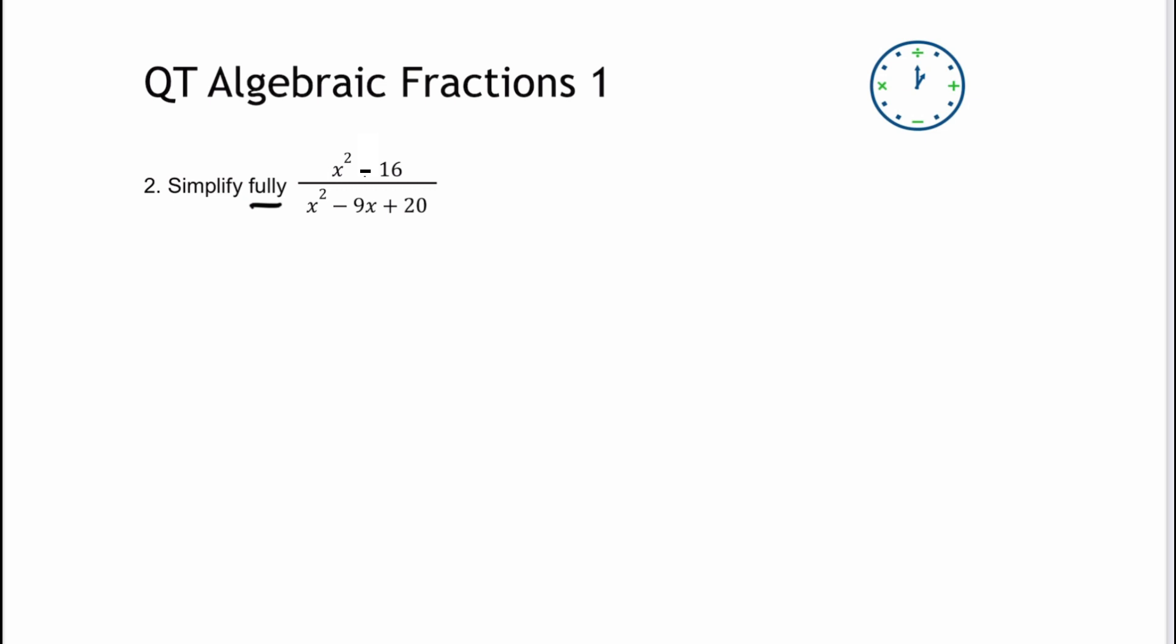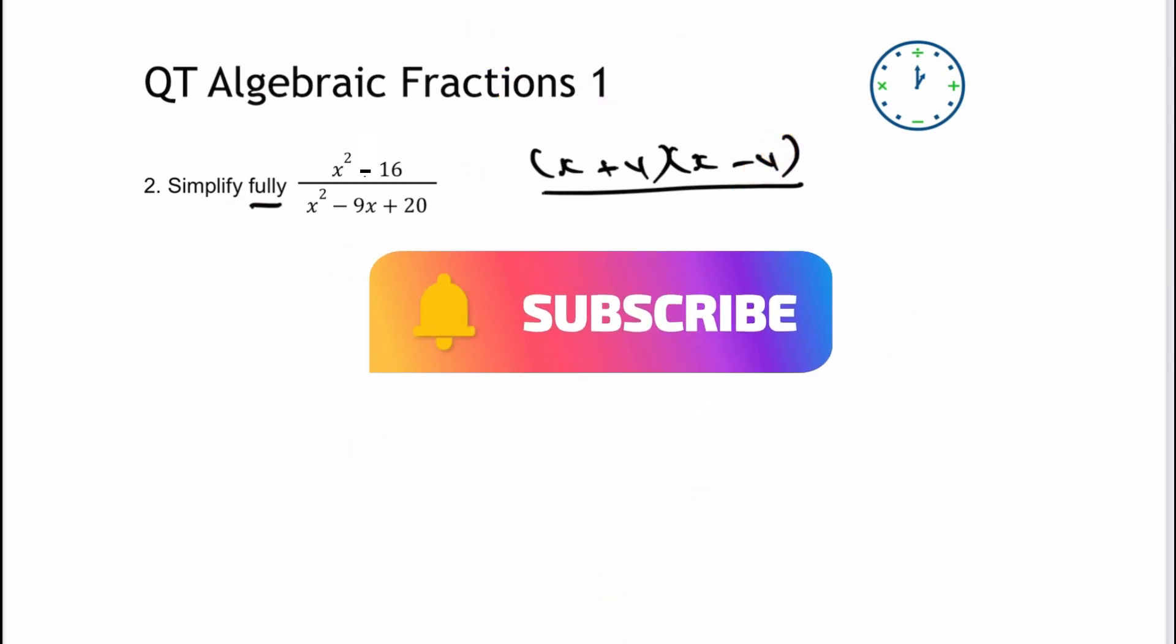Now the numerator is the difference of two squares, which is going to factorize to x plus 4 multiplied by x minus 4. If you're not sure about any of these things, let me know in the comments and I will always send you through a playlist to have a look at.